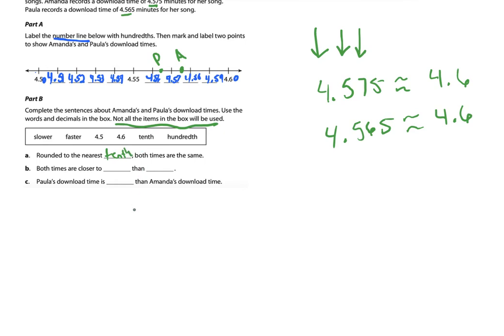Both times are closer to blank than blank. They only give us two numbers: 4 and 5 tenths and 4 and 6 tenths. Since I already did the rounding and both round up to 4 and 6 tenths, both times are closer to 4 and 6 tenths than 4 and 5 tenths.